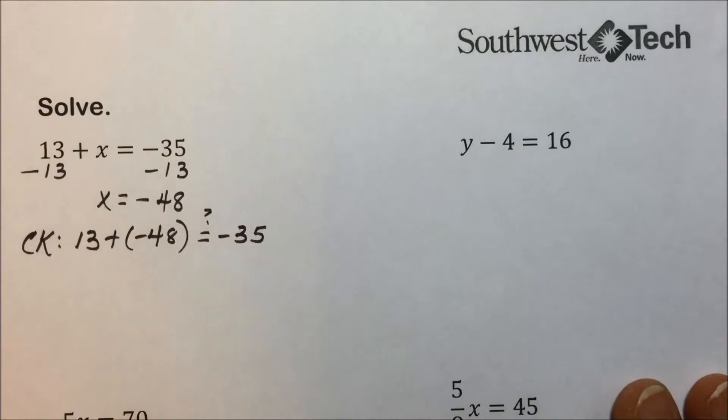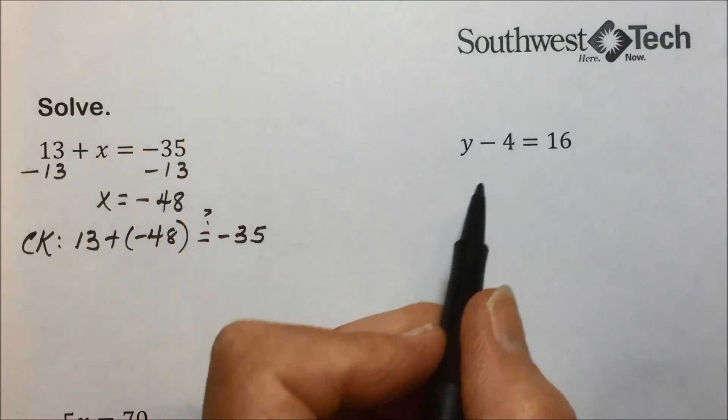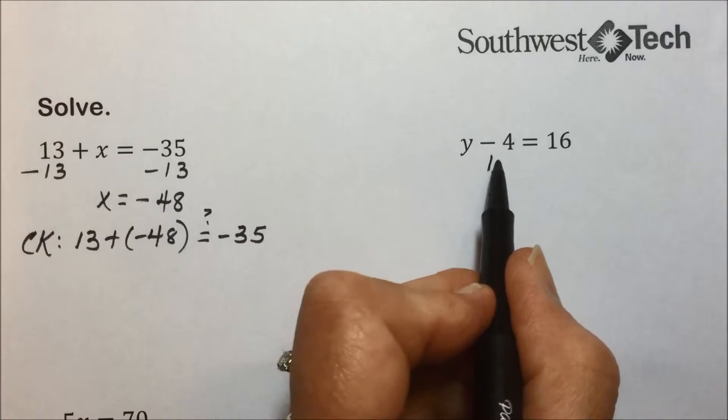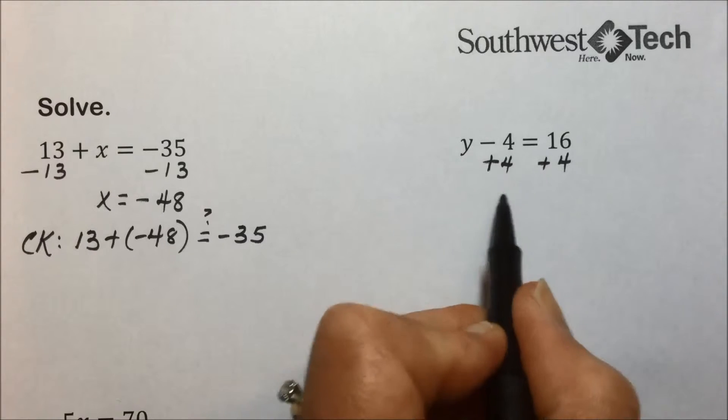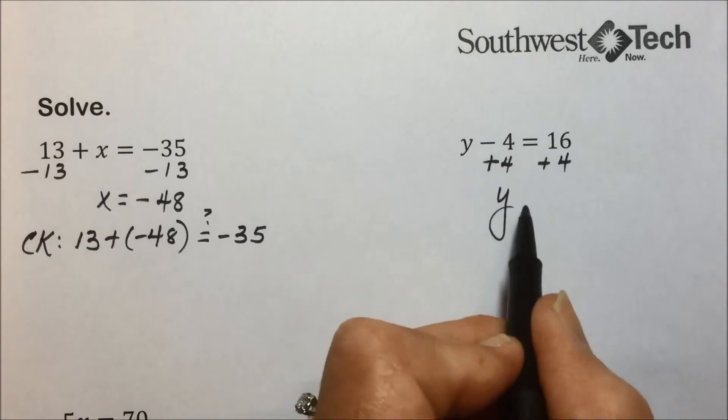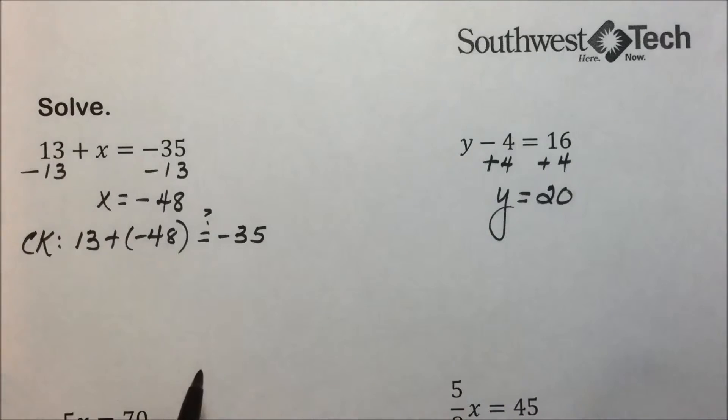In this next example we want to solve for y. It's being reduced by 4, so to counter that we'll add 4 to both sides. The 4's cancel out leaving y, and 16 and 4 leaves us with 20.